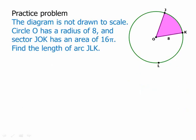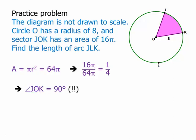Here's a practice problem — pause the video and then we'll talk about it. The diagram is not drawn to scale. The circle has a radius of 8, and the sector has an area of 16π. From the radius, we can figure out the area of the whole circle: 64π. Now let's figure out how much of the circle we have: 16π over 64π is one-fourth. So that means angle JOK is a 90-degree angle. That's where the diagram was fooling us — if drawn to scale, JOK would actually be a right angle.